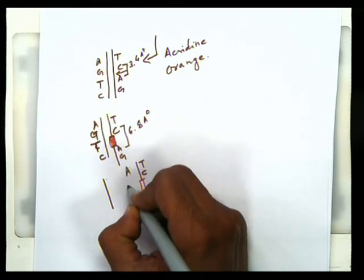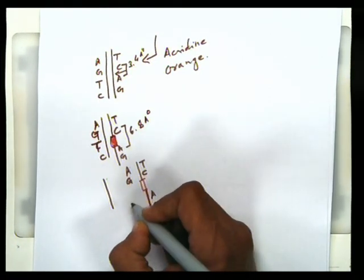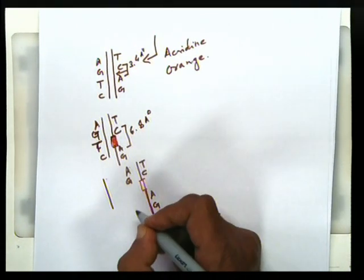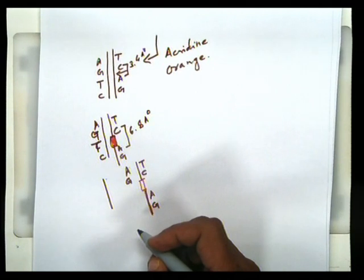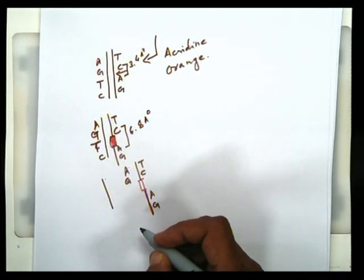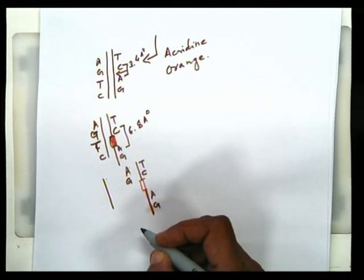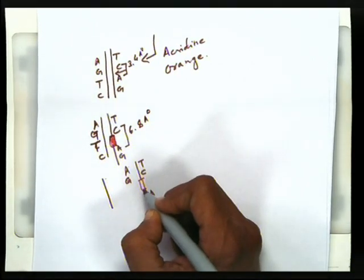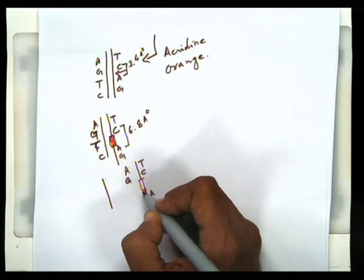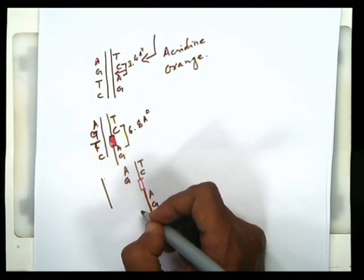There will be an A over here, G over here and then the enzyme is primed actually. The enzyme DNA polymerase is primed to add a fresh nucleotide at every 3.4 angstrom distance. What it finds over here is the intercalating chemical. The chemical substance which is totally unidentifiable to the enzyme.